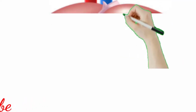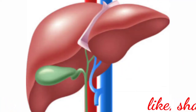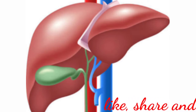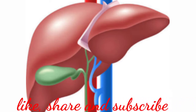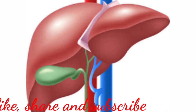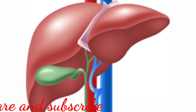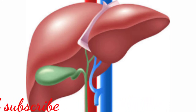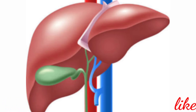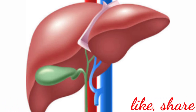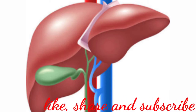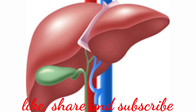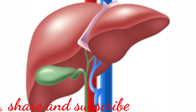Liver: the liver is the largest gland in our body, situated on the upper right side of the abdominal cavity, just below the diaphragm. The liver consists of two major lobes — left and right — and two minor lobes. Each lobe has hepatic lobules, which are the functional units of the liver.